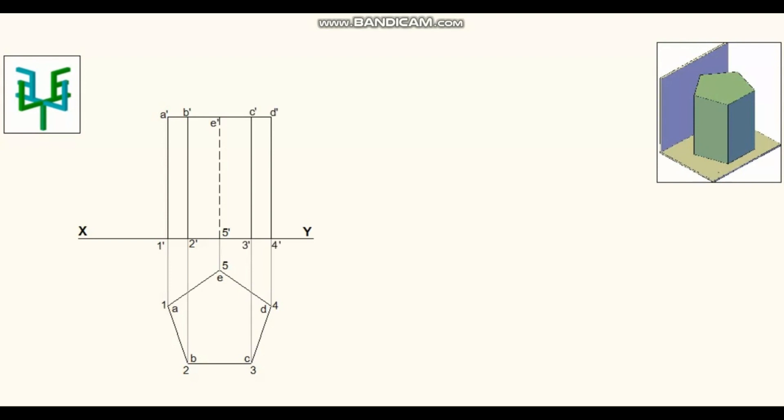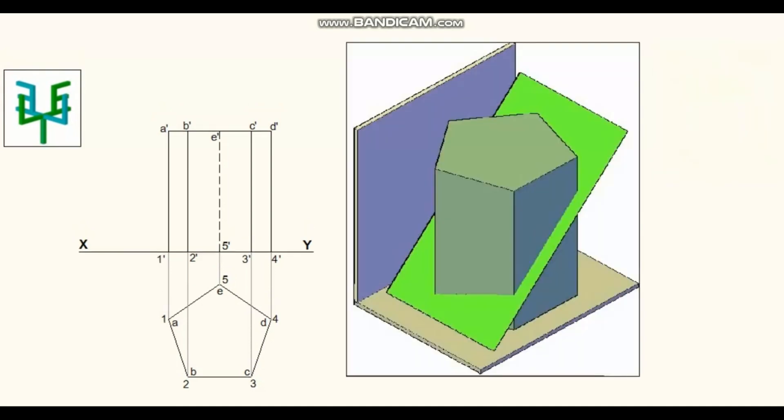The sectional plane is perpendicular to VP, so sectioning of the prism must be done in the elevation. The sectional plane is bisecting the axis. As per the position of the plan, the axis line will be coinciding with the invisible edge 5-E dash of the elevation.